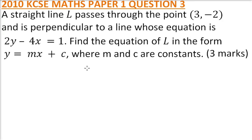2010 Paper 1 Question 3. A straight line L passes through the point (3, -2) and is perpendicular to a line whose equation is 2y - 4x = 1. Find the equation of L in the form y = mx + c, where m and c are constants. For perpendicular lines, the product of the gradient is always equal to 1.